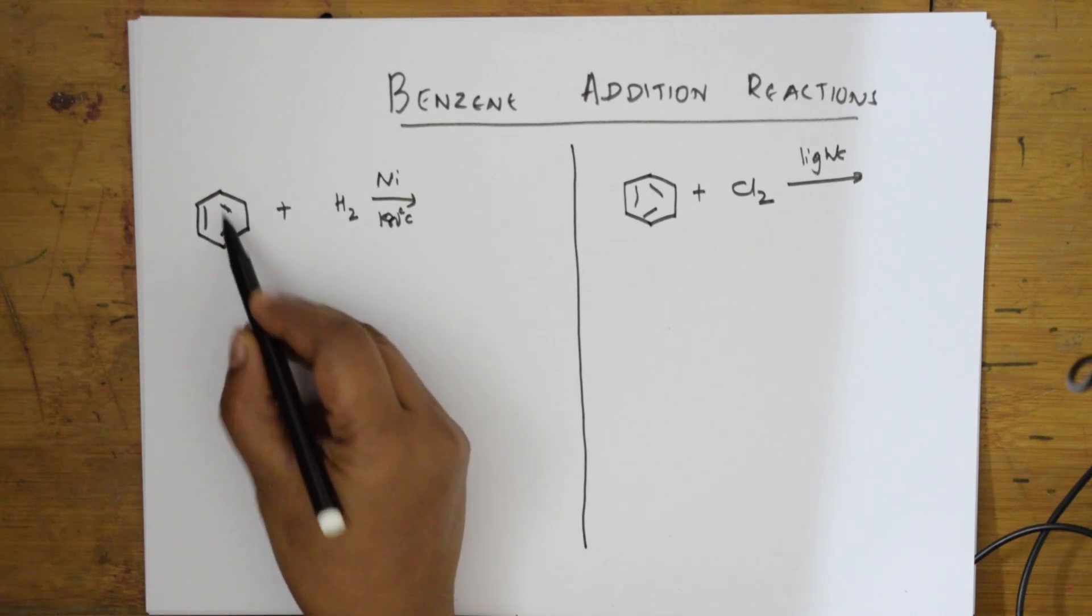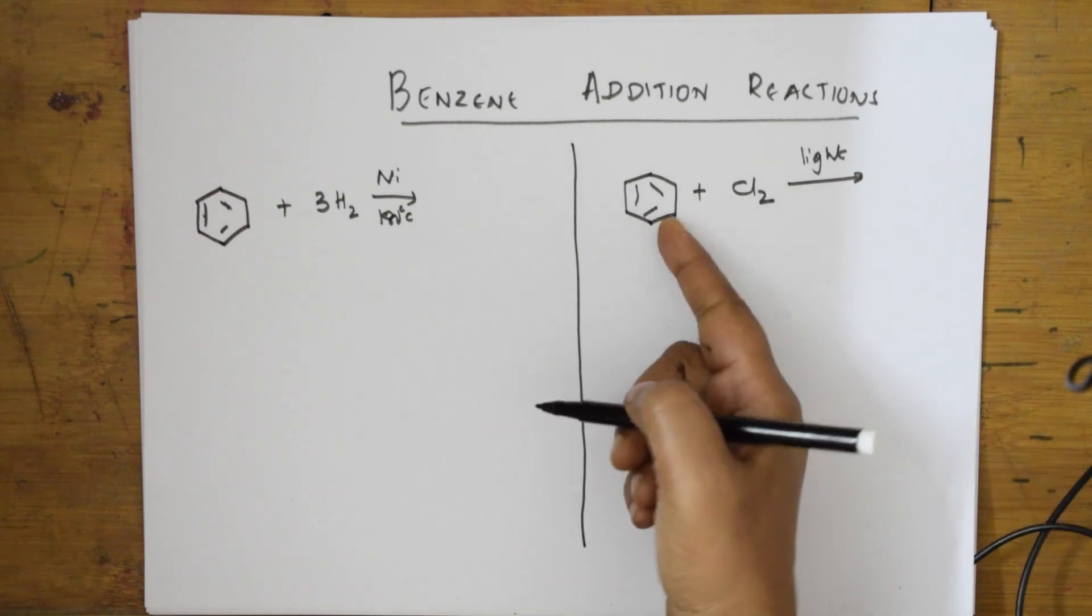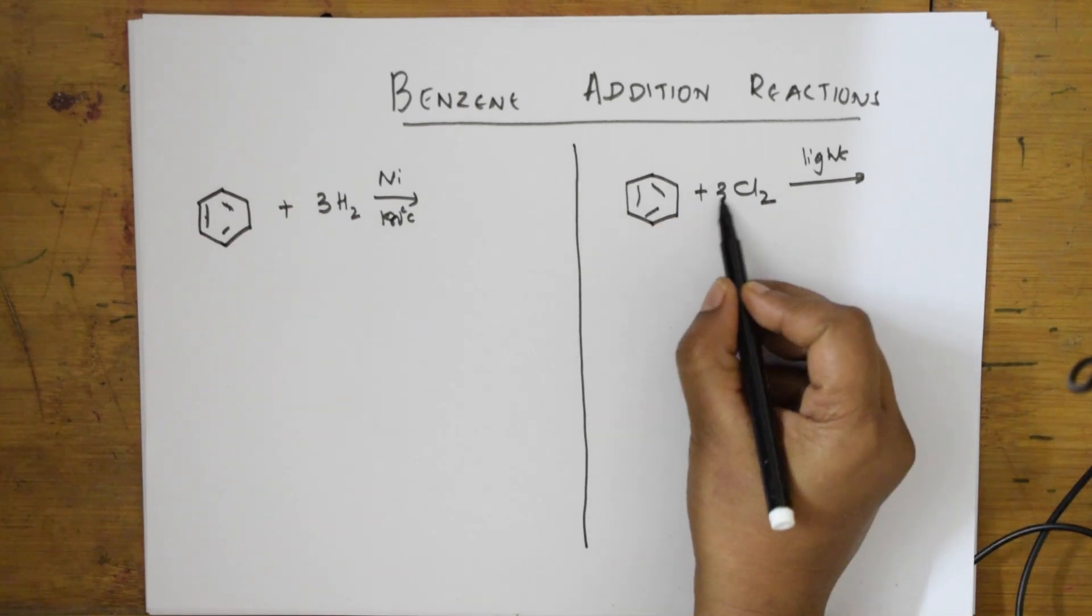How many pi bonds are there? One, two, three. So three hydrogens I will be adding. How many pi bonds? Three. So I will be adding three chlorines.